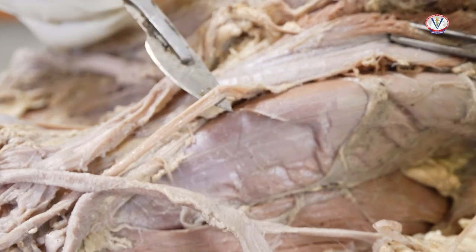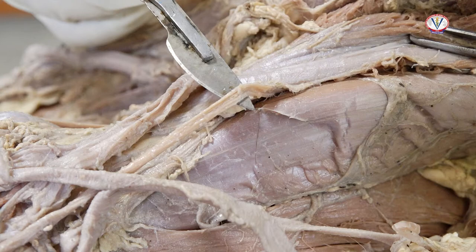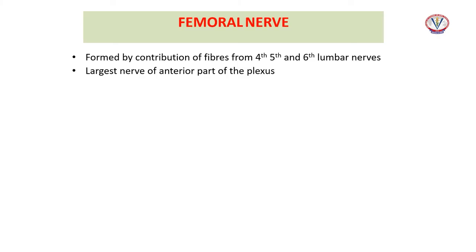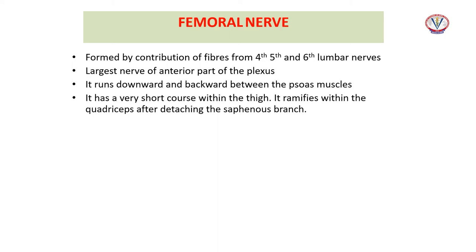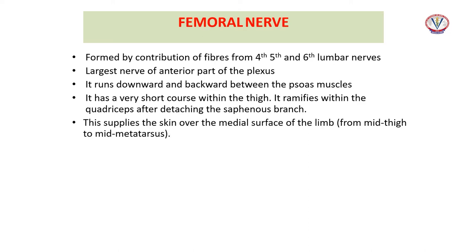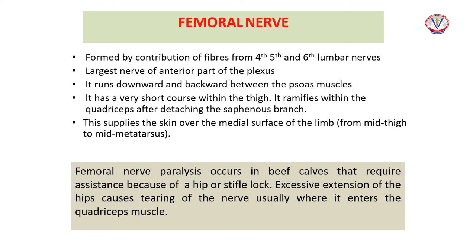The femoral nerve is formed by fibers from the fourth, fifth, and sixth lumbar nerves. It is the largest nerve of the anterior part of the plexus, runs downward and backward between the psoas muscles, and ramifies within the quadriceps after detaching the saphenous branch, which supplies the skin over the medial surface of the limb. Femoral nerve paralysis occurs in beef calves requiring assistance due to a hip or stifle lock; excessive extension of the hip causes tearing of the nerve usually where it enters the quadriceps muscles.